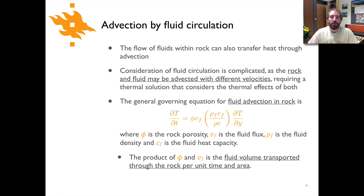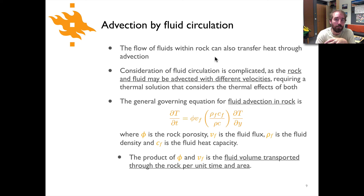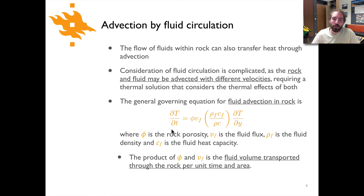Groundwater flow presents a complicated problem because you may have a tectonic component of rock being moved by a fault that's advecting heat simultaneously with groundwater flow, and the velocities may be entirely different — for example, tectonic uplift combined with groundwater flowing downward. We can consider the effects of both using a simple equation that combines fluid and rock advection.